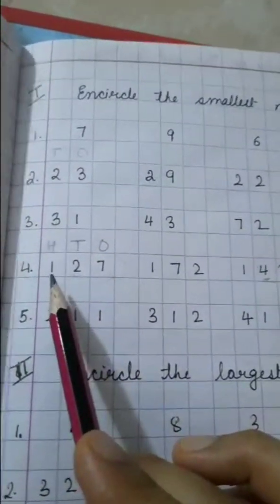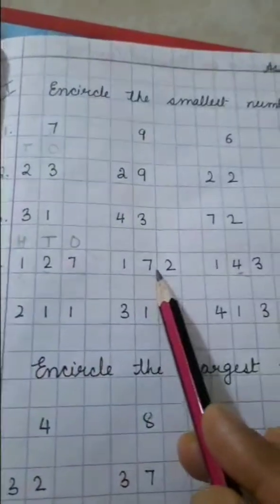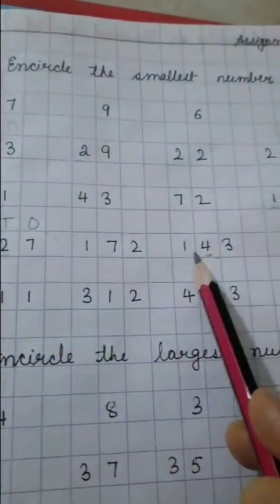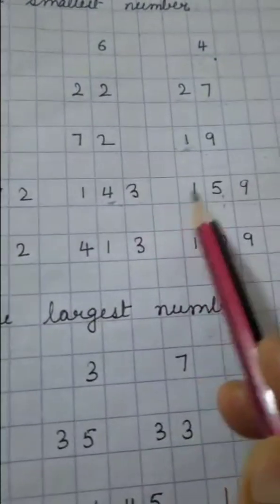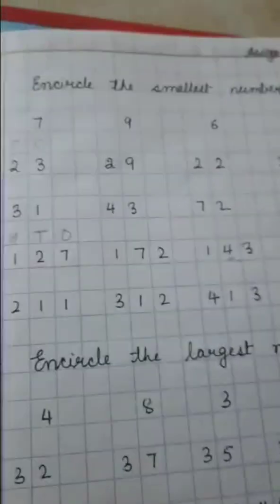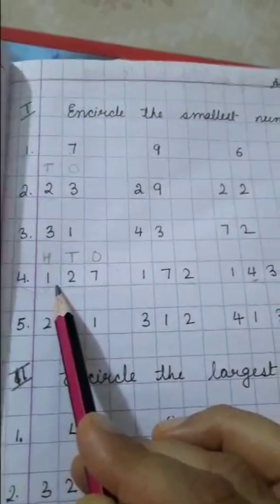Now see, now we will call this number. 127, 172, 143, 159. So the smallest number in this group is 127.